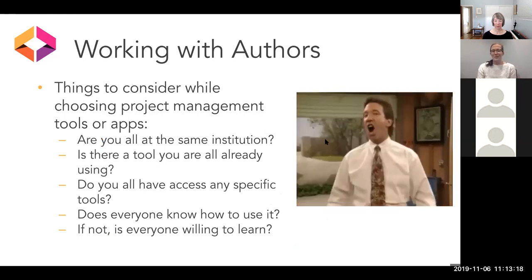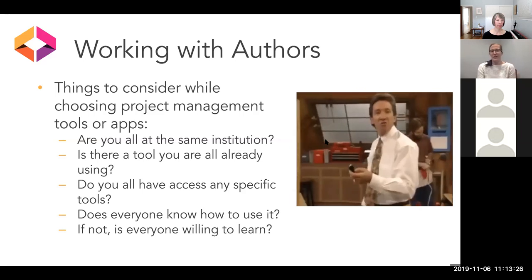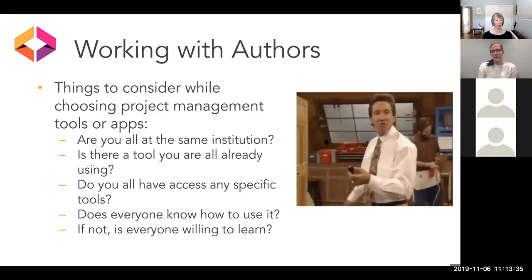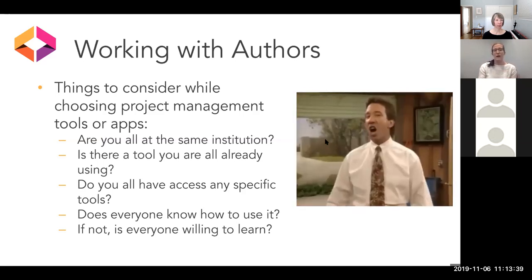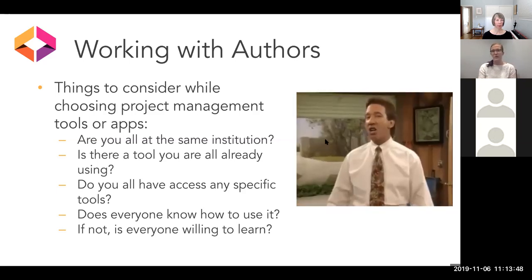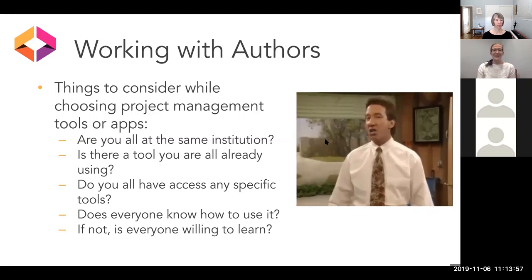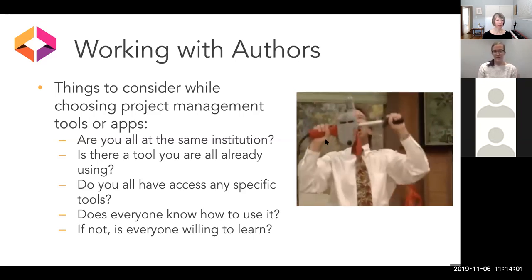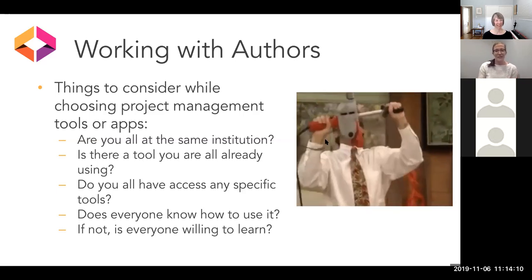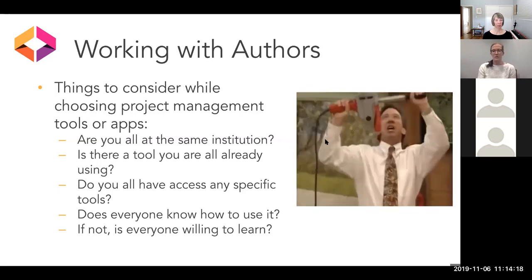There's really no right project management tool. Jira, Asana, Basecamp — they're all good tools. It really depends on what works for you and your team. Consider: are you all at the same institution? Does your institution already provide access to one of these tools? At Virginia Tech, a lot of people are using Trello since it's already been approved and gone through all the processes. Also consider whether there's a tool you're already using — if you already have accounts on Basecamp or Trello, you don't have to log into another thing. Authors don't want to check on one more thing either.